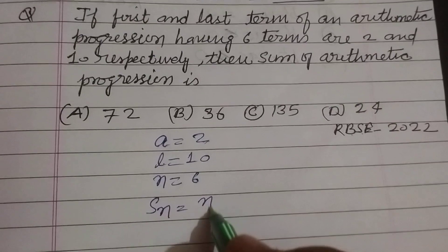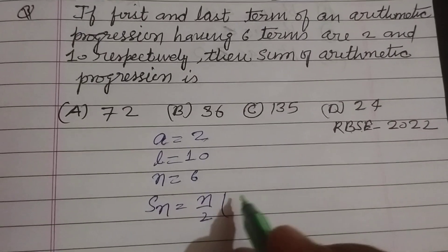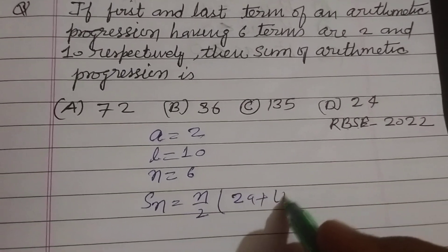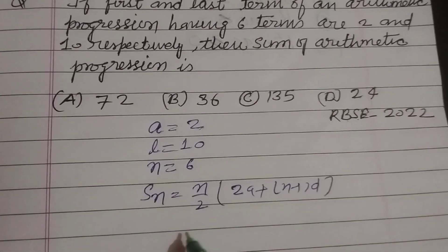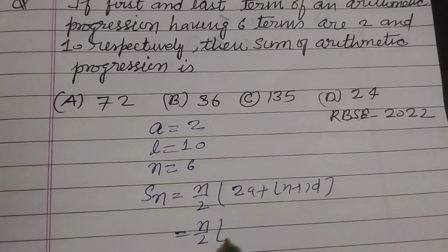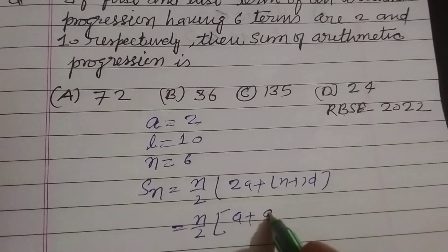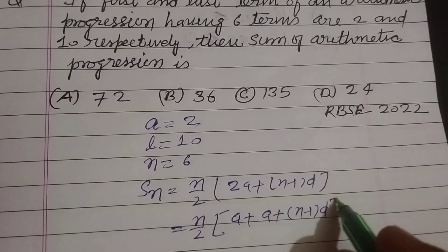Sn equal to n by 2, 2a plus n minus 1 into d. So this is our formula n by 2 we can write it as a plus a plus n minus 1 into d.